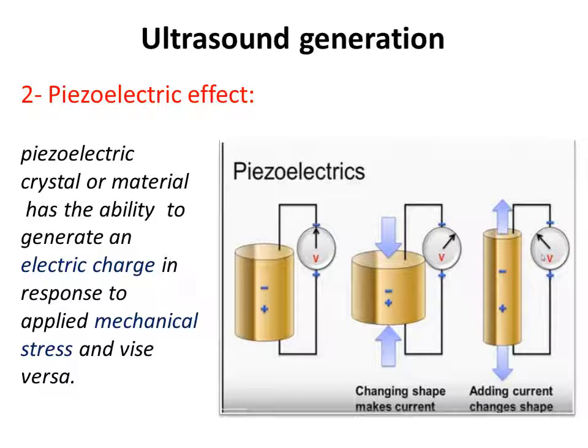How does the ultrasound device generate an ultrasound beam? The device generates it through the piezoelectric crystal inside the transducer. This crystal has the ability to generate an electric charge in response to applied mechanical stress, and vice versa — it converts one form of energy to another. When we apply an electrical charge to the crystal, it converts this electrical charge into an ultrasound beam. When the reflected ultrasound beam returns to the crystal, the crystal converts it back into an electrical charge that carries all information from the body.